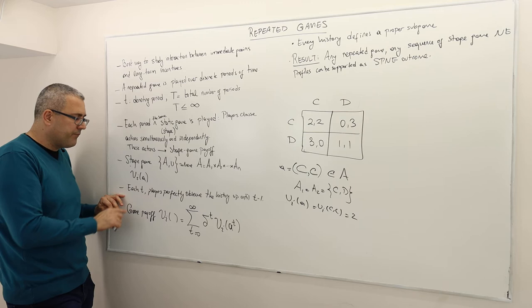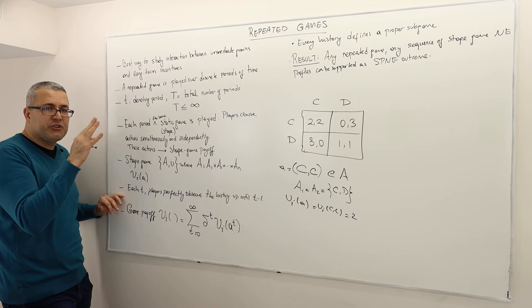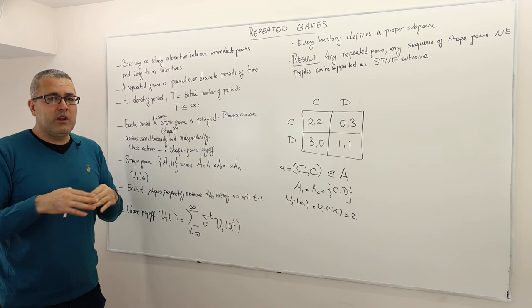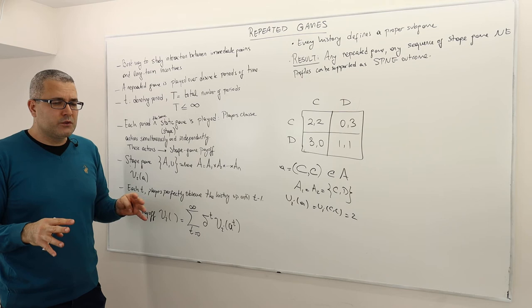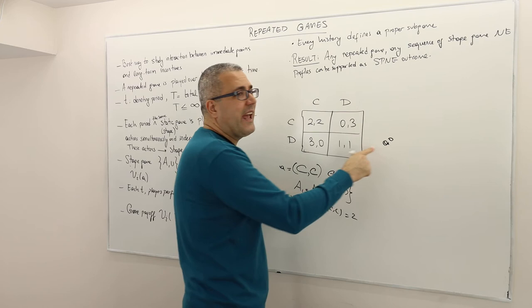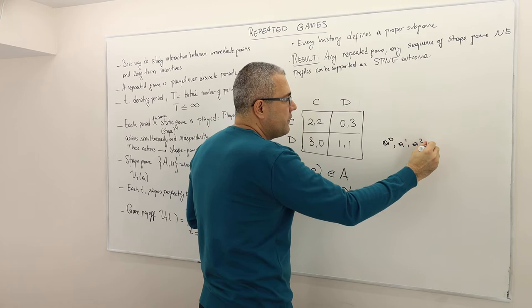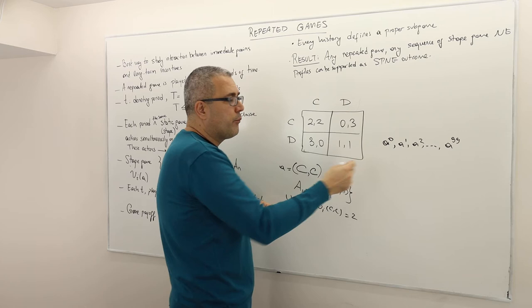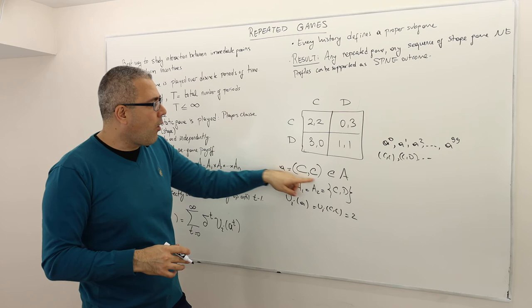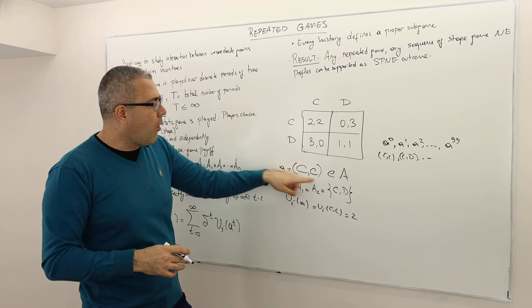At every period t, the players perfectly observe the history up until period t minus one. So if we've played this game 99 times and are now in period 100, before making our moves, both player one and two observe the entire history — meaning they observe what action profile was realized in period zero, period one, period two, all the way to period 99. These are profiles like CC, CD, DC, or DD. So as we play this game, we create a sequence of action profiles a₀, a₁, a₂, and so on, all elements of capital A.